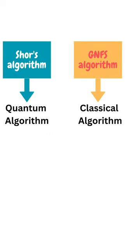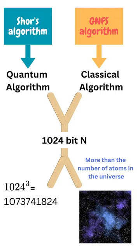One of the best classical algorithms for factoring is the general number field sieve algorithm. For 1024 bit n, the number of steps in Shor's algorithm is 1024^3, while the number of steps in the classical algorithm is more than the number of atoms in the universe.